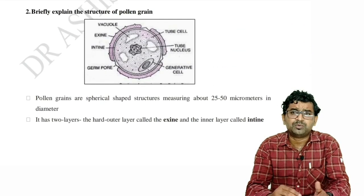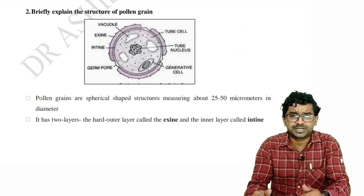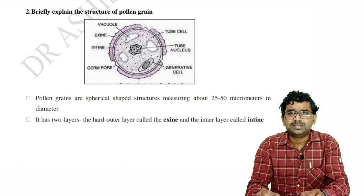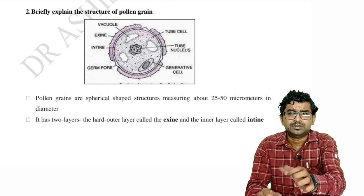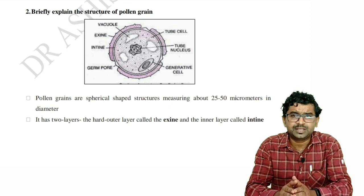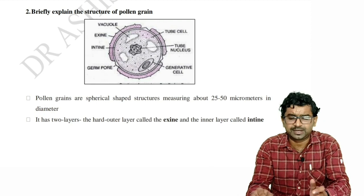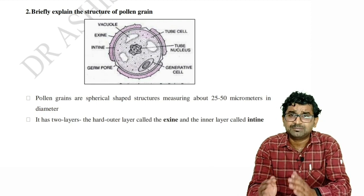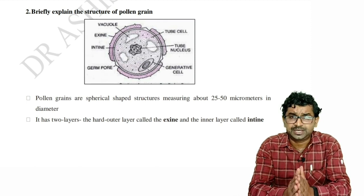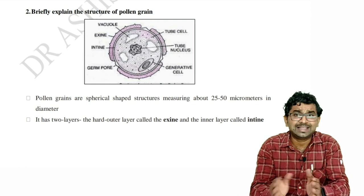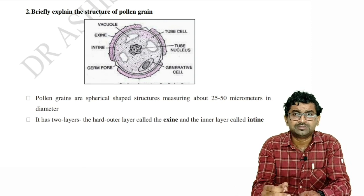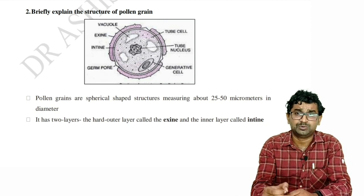Next, the second question: the structure of a pollen grain with a diagram. This is the most expected question. The question may be phrased as: explain with a neat labeled diagram the structure of a mature pollen grain — or it may ask about microsporogenesis. The question may be worded differently, so you should know the other names also. Go through the textbook thoroughly. Do not rely only on ready-made notes — refer to the NCERT textbook as well in your last studying hours.